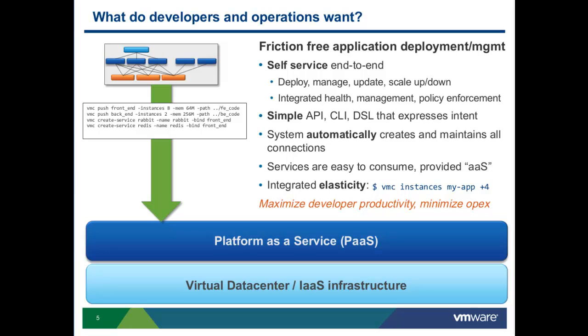The PaaS engine basically automatically creates and maintains all the connections between the middleware components. In the first demo example, when scaling a simple app, I'm not configuring the load balancer or telling the application server there is an additional instance — that's not part of my business logic. And you want services to be easily consumed: in the second demo you'll see how easy it is to consume a database service without configuring, installing, or maintaining it. Bottom line, developers want maximum productivity, and operations want to manage everything elastically and efficiently.